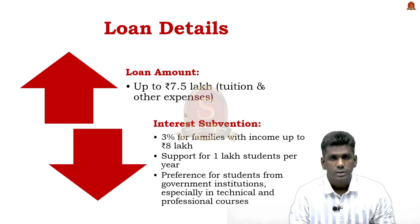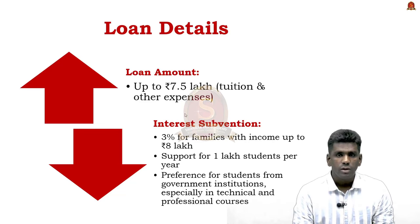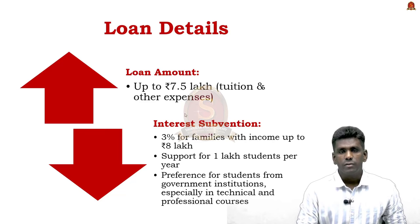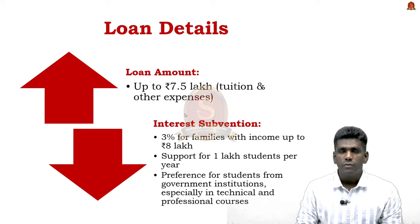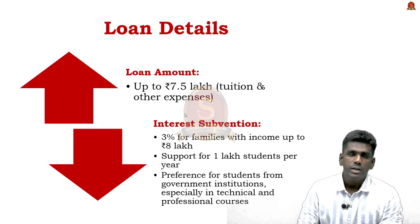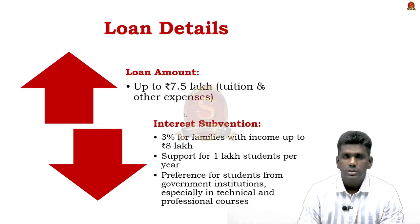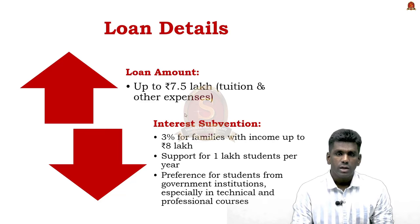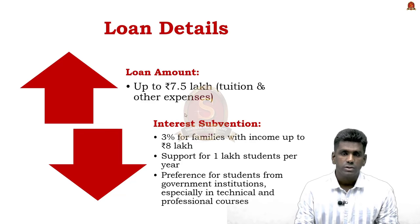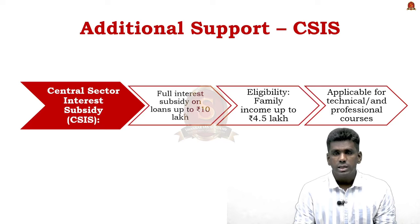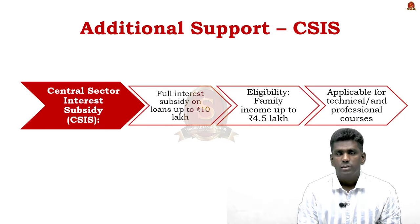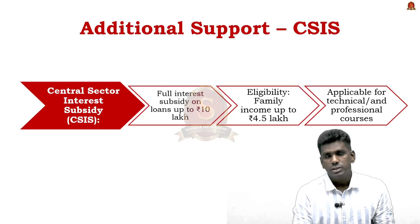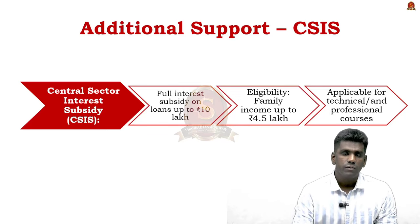Under the PM Vidya Lakshmi Scheme, the loan amount is ₹7.5 lakh per student, covering both tuition and academic expenses. For students with annual family income up to ₹8 lakh, the scheme offers 3% interest subvention for loans up to ₹10 lakh. This interest subvention support will be given to 1 lakh students every year, with preference given to students joining government institutions and technical or professional courses. A similar scheme — the Central Sector Interest Subsidy Scheme — provides full interest subvention for loans up to ₹10 lakh for students with annual family income up to ₹4.5 lakh pursuing technical and professional courses.